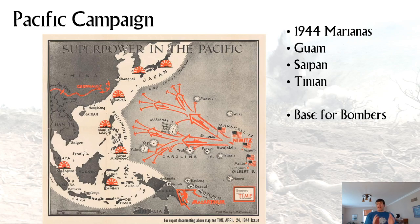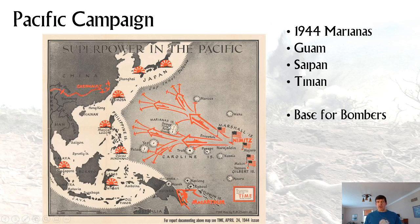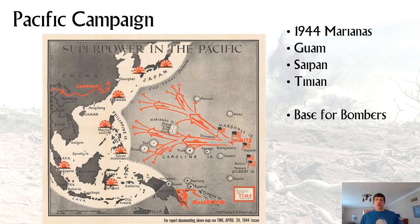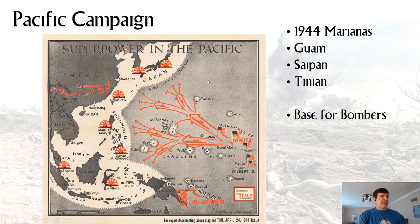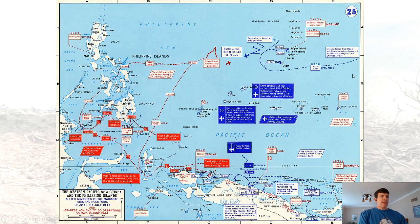The strategy was to avoid strongly held bases — like Rabaul or Truk — and attack islands to make a base for the next island to attack. The Marianas Islands — Guam, Tinian, and Saipan — were perfect for bomber bases. Guam was an American colony from the Treaty of Paris in 1898. Those islands were ideal for brand new bombers called B-29s to bomb Japan.